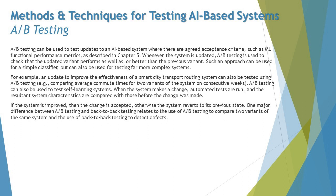For complex systems, where outputs may be probabilistic, A/B testing makes it easier to determine what the best recommended outcome is. For example, an update to improve the effectiveness of a smart city transport routing system can be tested using A/B testing, such as comparing average commute times for two variants of the system on consecutive weeks.